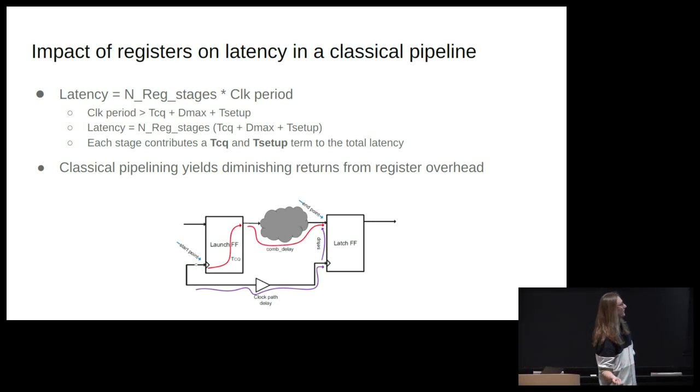So let's talk about classical pipelining for a second. How do you get the latency of your pipeline? It's just the number of stages times the clock period. A clock period is the clock to queue time plus the maximum delay plus setup. So latency is the number of register stages times clock to queue plus the max path plus the setup time constraint. So the takeaway here is each register has an overhead in your pipeline. So every time you add a register to your pipeline, you're increasing the latency just to have a register, not to do any computation with your combination logic. And then classical pipelining, because of this, yields diminishing returns. The more you cut your max path, the more it's dominated by just this constraint that we have from using registers.